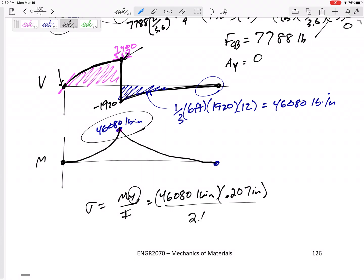And the I, we didn't have to calculate it, was given as 2.68 inches to the fourth. And everything is in pound inches, so my stress will be in pounds per square inches.